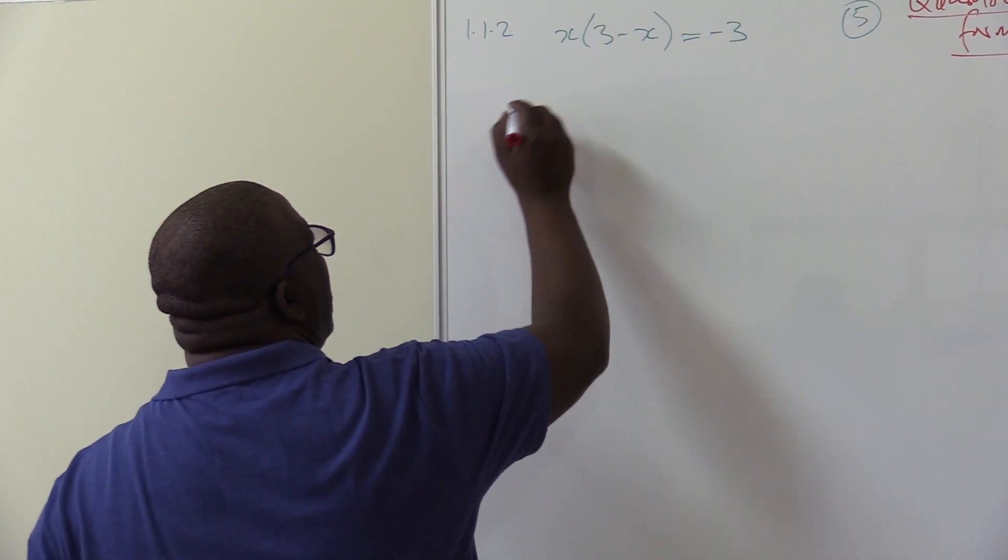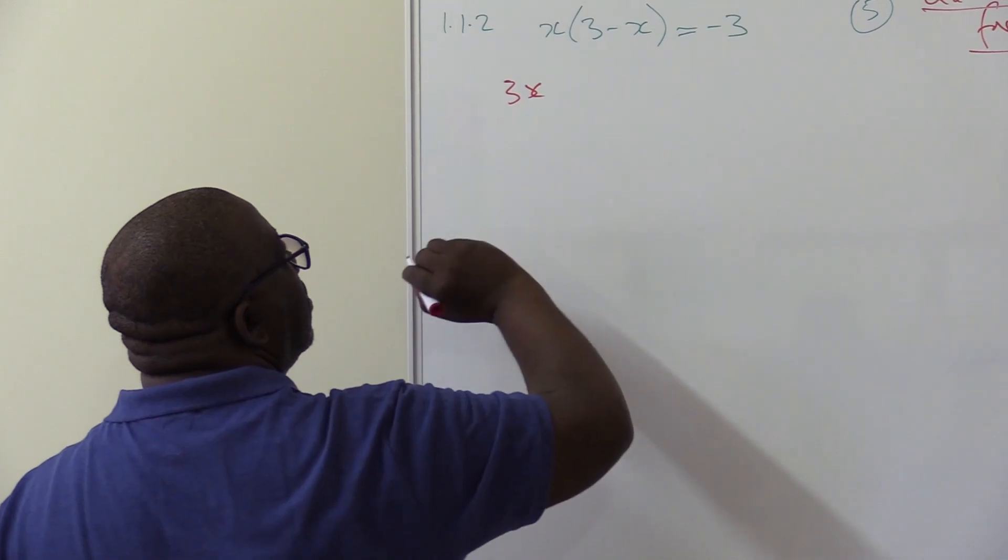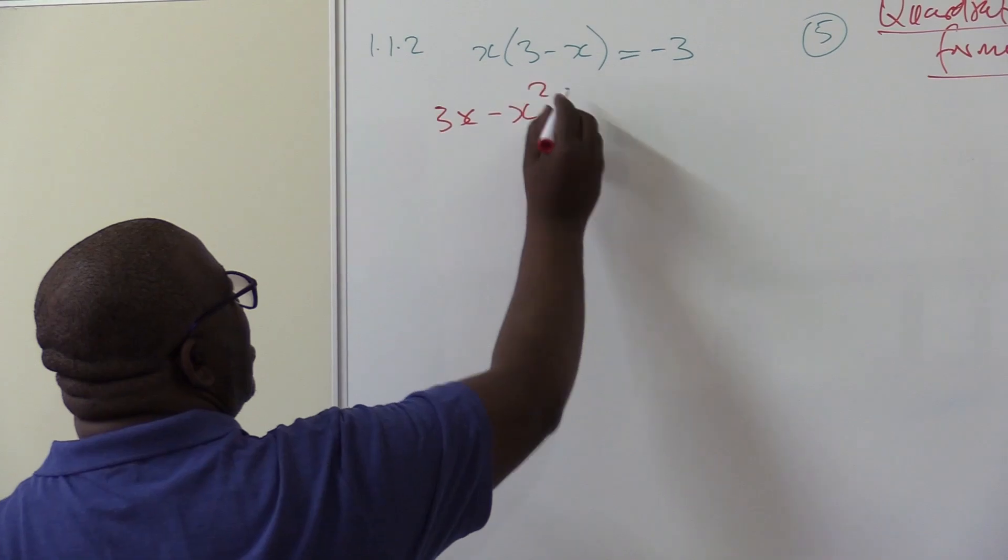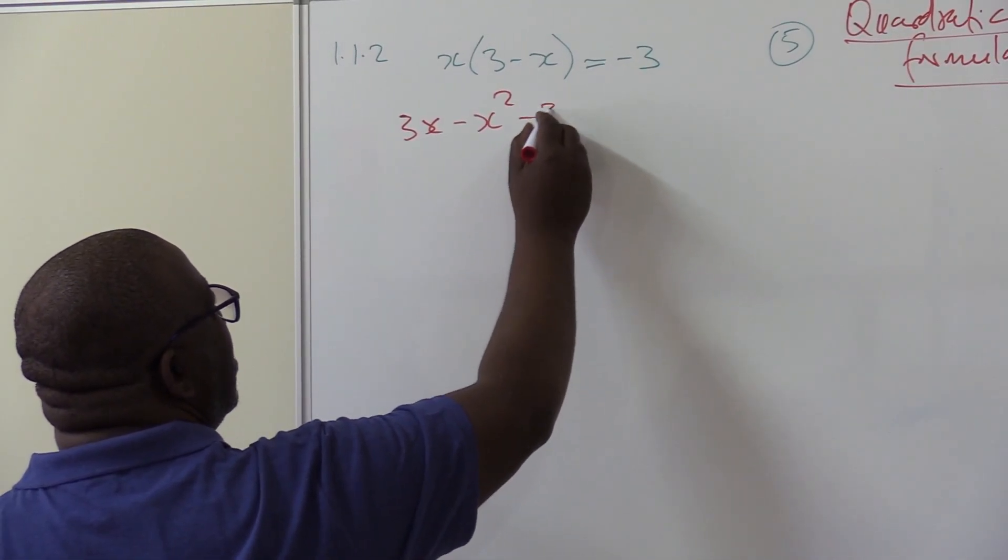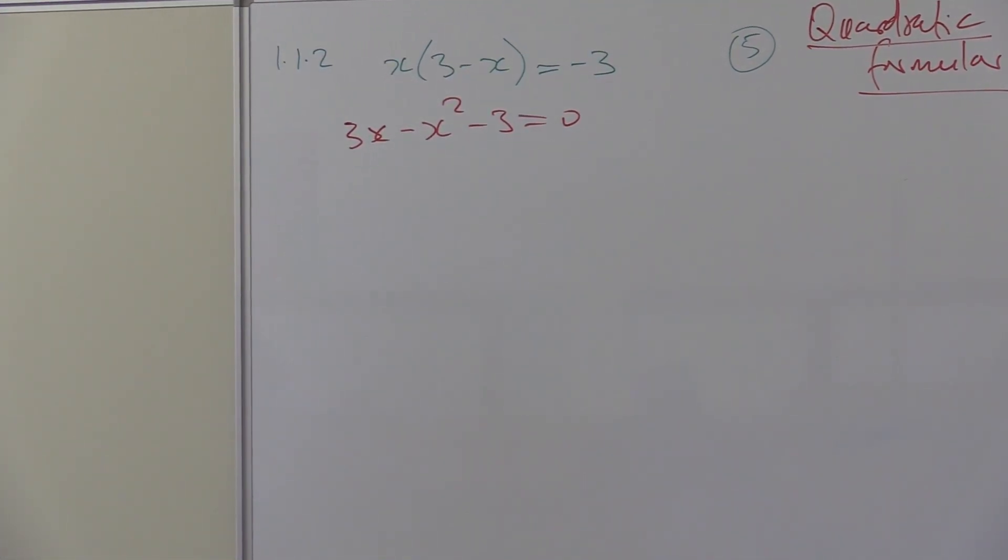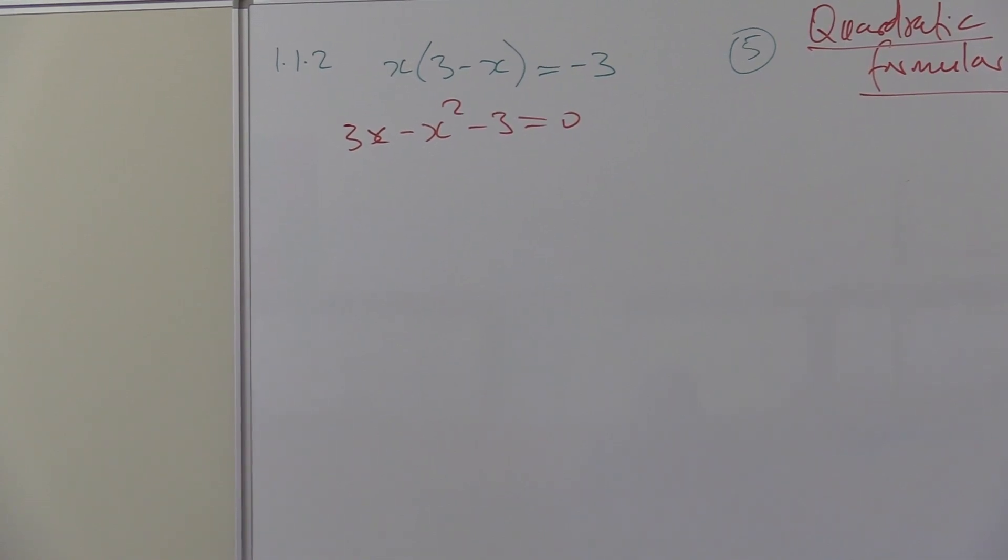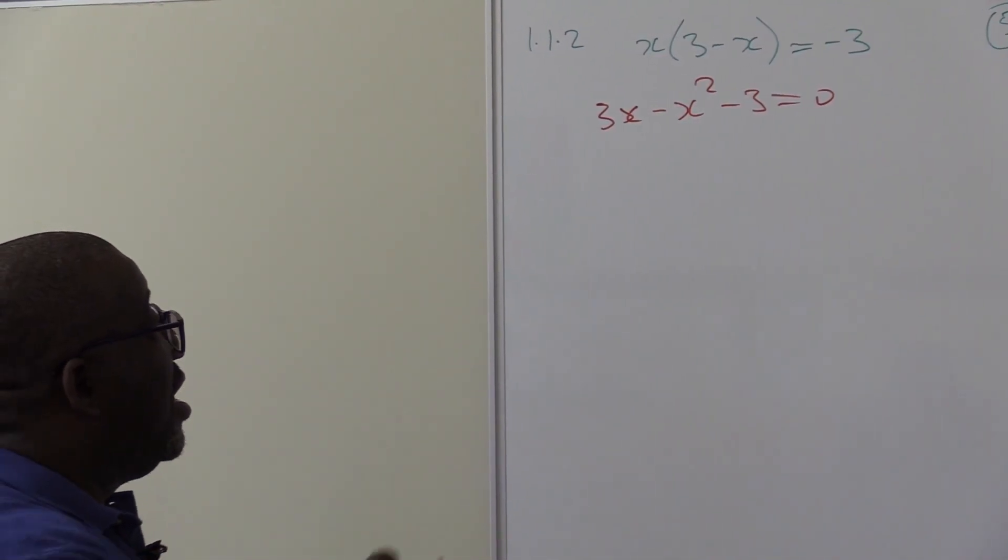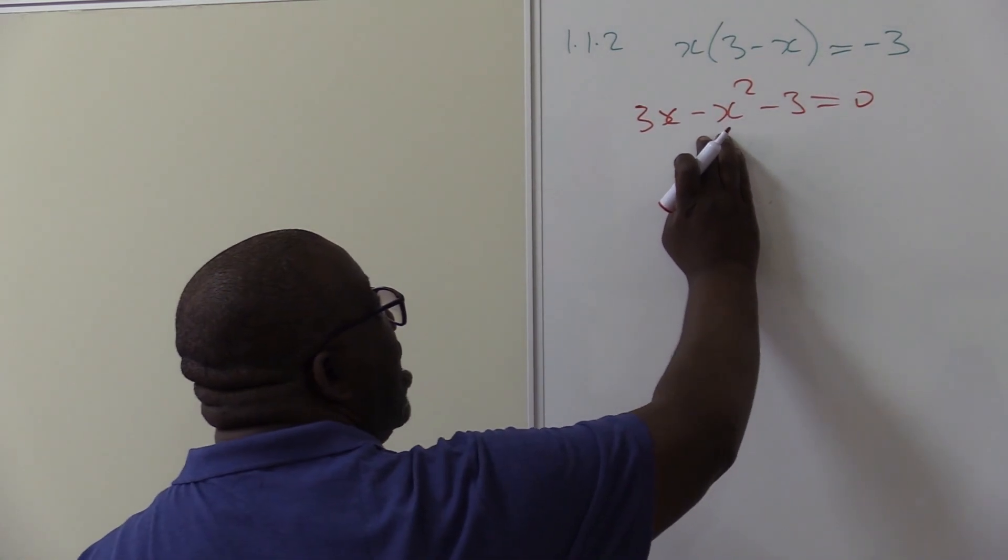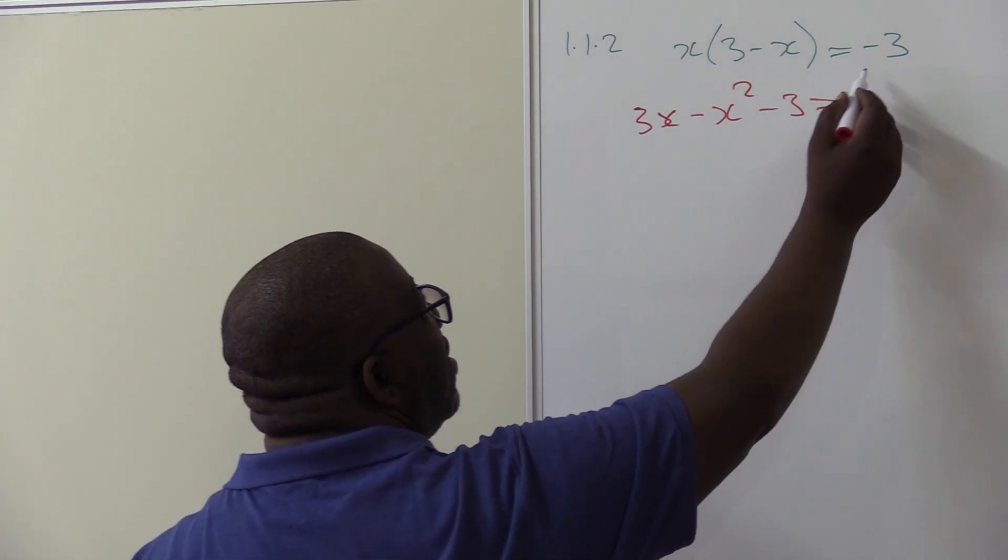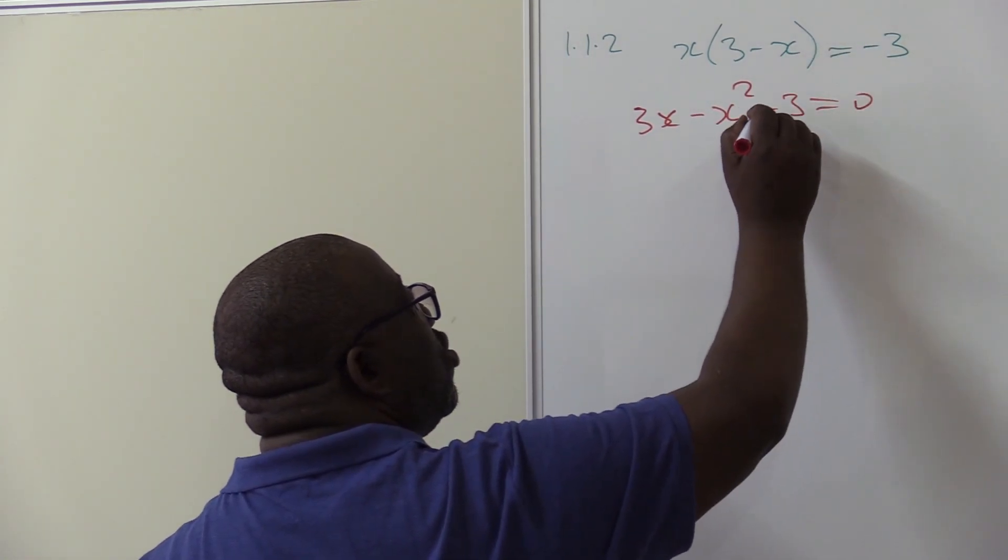Let's work it out. X times 3, this will give me 3X. X times minus X, it gives me minus X squared. Take this minus 3, this side, it will be minus 3 equal to 0. Is this arranged in the form of AX squared plus BX plus C equals to 0? No. Let's arrange it.